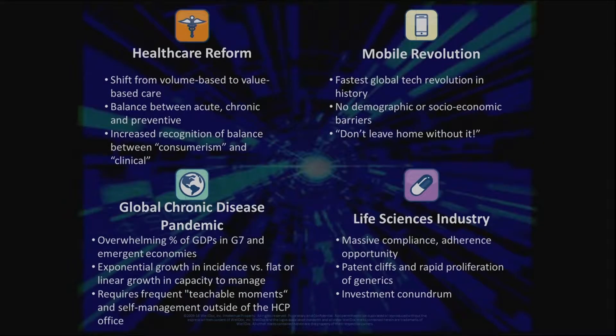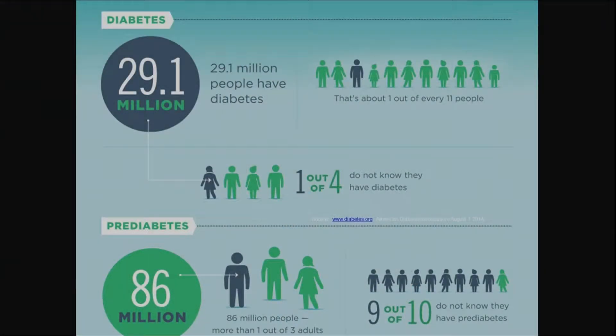There are now more cell phones on the planet than toothbrushes and toilets. When Prime Minister Modi was elected in India, he said forget going to the moon — I want a toilet for every Indian. The honest truth is everybody has a mobile phone. It's a technology that knows no socioeconomic boundaries: the richest of the rich have it, the poorest of the poor have it. Samsung data shows people look at their phone 80 to 85 times a day. If you can leverage that platform to guide behavior at the teachable moment, we all win.